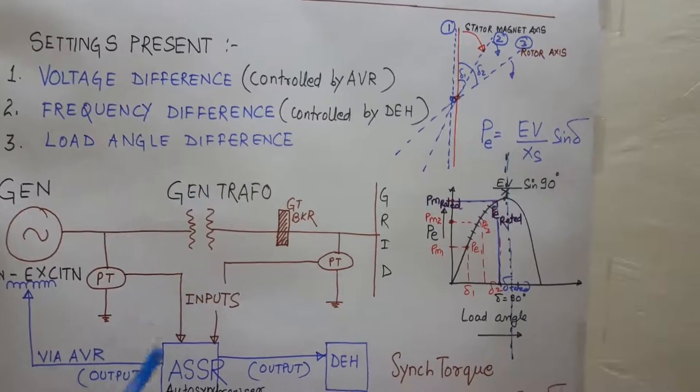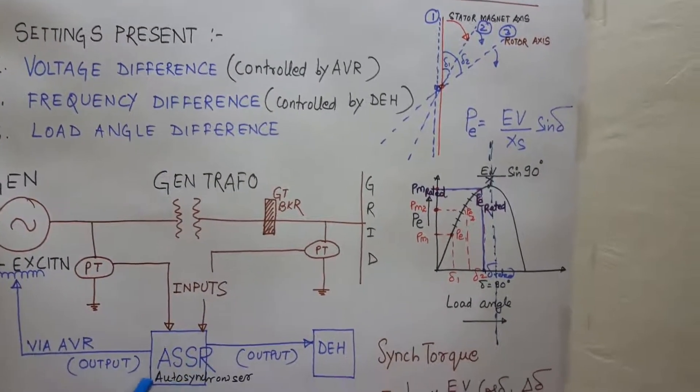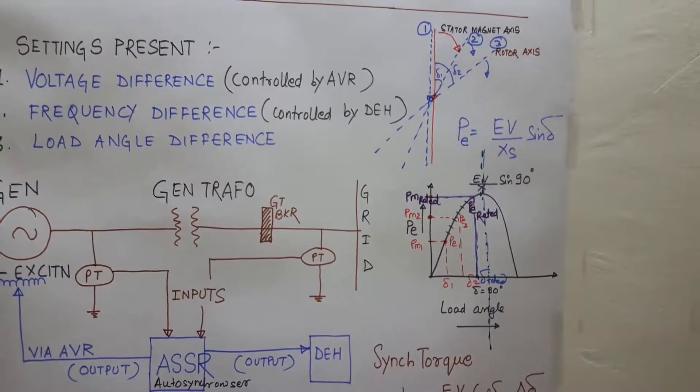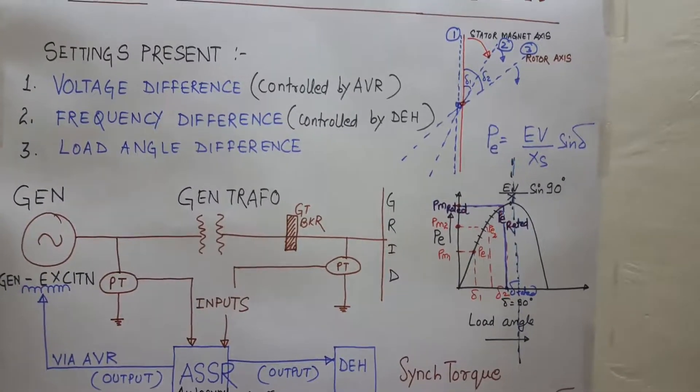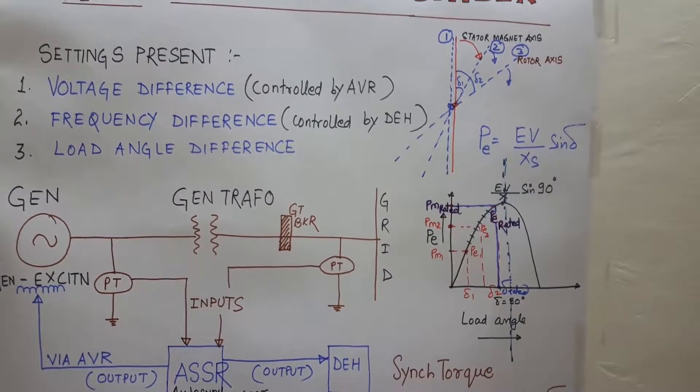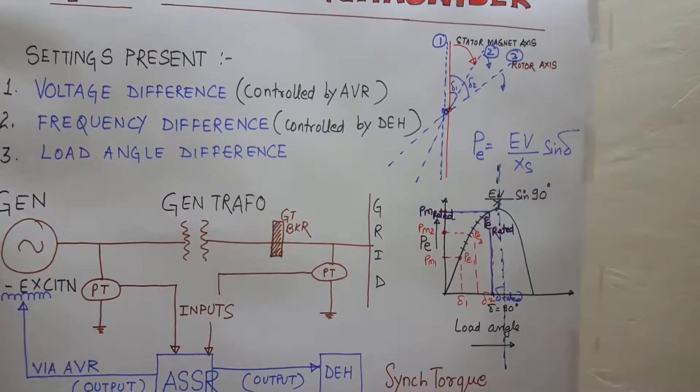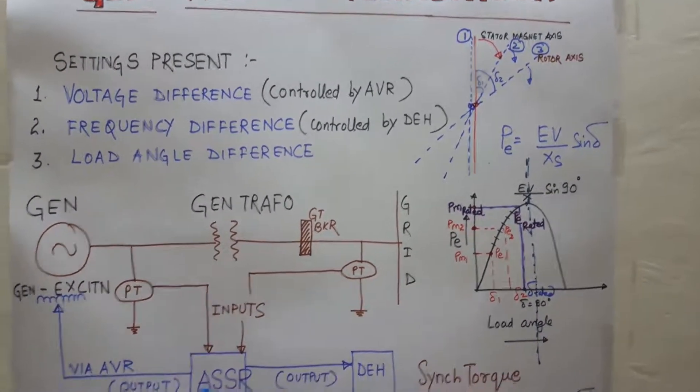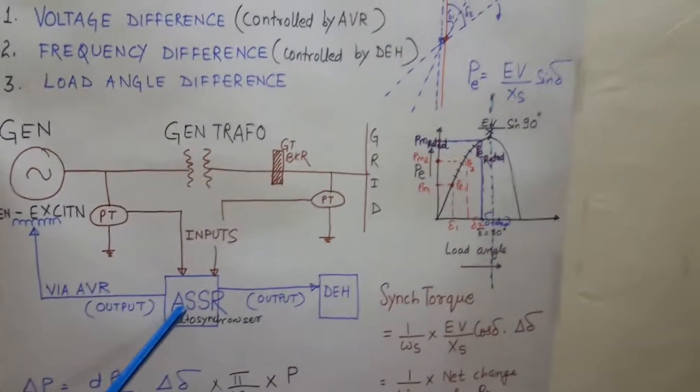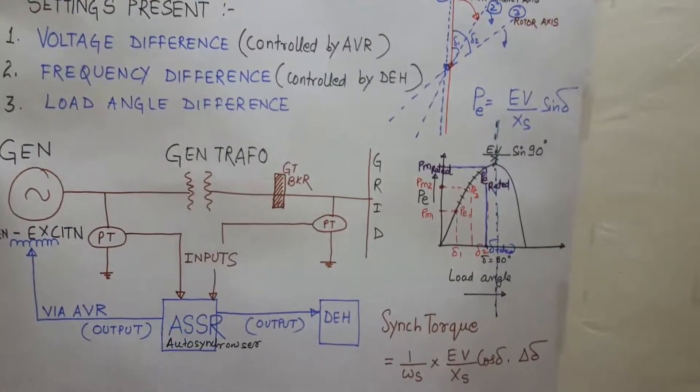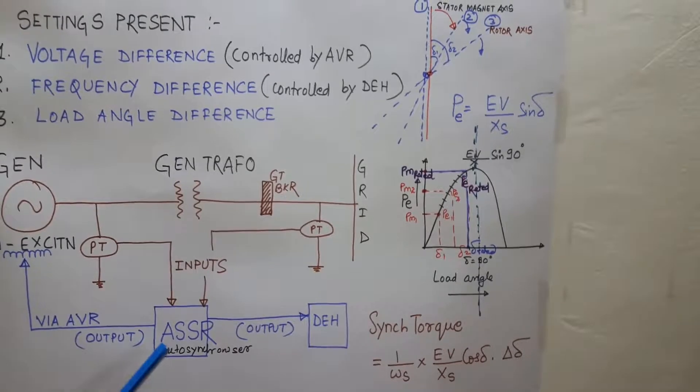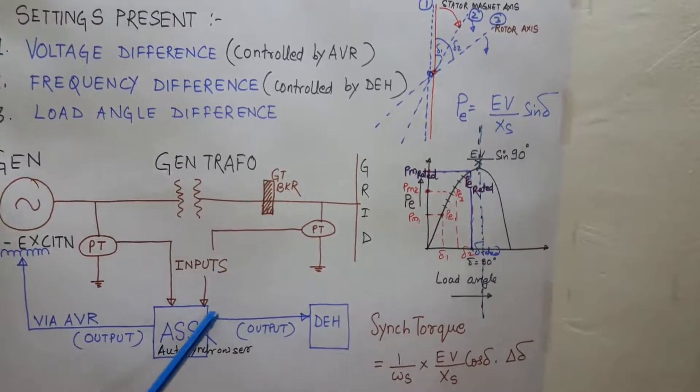Now these two inputs are fed into the ASSR or auto synchronizer. When we are going to synchronize our unit with the infinite bus, we have to send a command to the auto synchronizer. After receiving the command from the operator, the auto synchronizer is now activated.